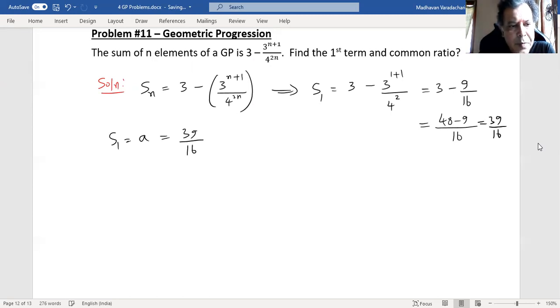Now if I substitute n for 2, we will have S_2 equals 3 minus 3 to the power of 2 plus 1 by 4 to the power of 2 into 2. 2 into 2 is 4, so that will give us 3 minus 3 to the cube.